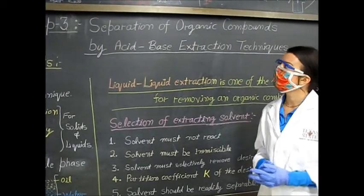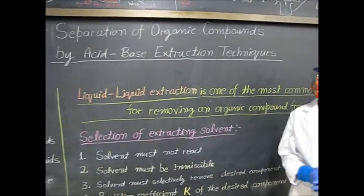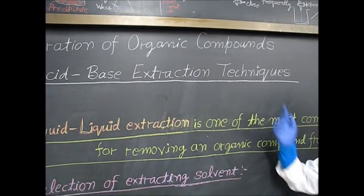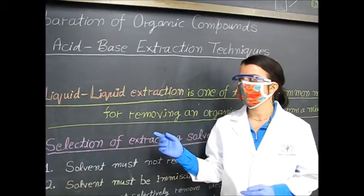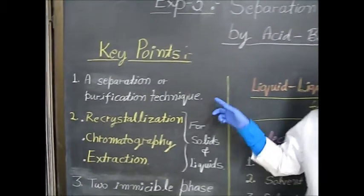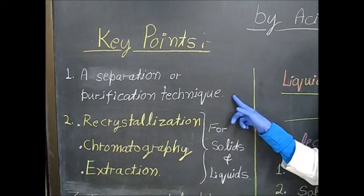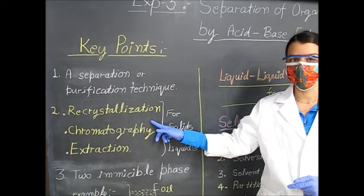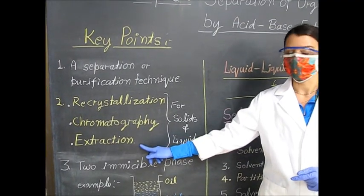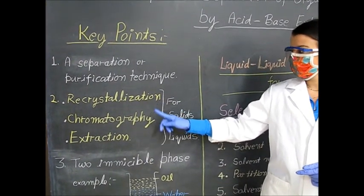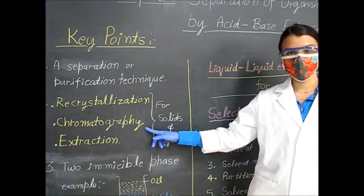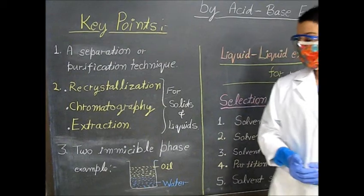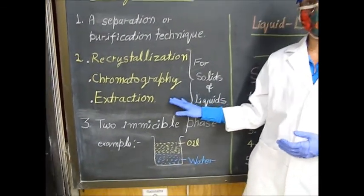For experiment 3, we are going to be doing a separation of organic compounds by acid-base extraction techniques. Some key points to this experiment involve separation and purification techniques. A couple examples of these techniques are recrystallization, chromatography, and extraction. You have done recrystallization and chromatography in previous labs, so you should have an understanding of these procedures. In this lab, we are going to be doing an extraction experiment.